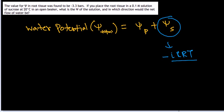Here it is given the value for psi in root tissue was found to be minus 3.3 bars. Bar is a unit for pressure. If you place the root tissue in 0.1 molar solution of sucrose at 20 degrees Celsius in an open beaker, what is the psi of the solution?